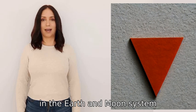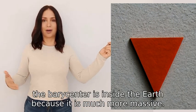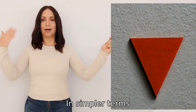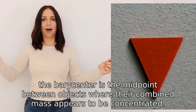For example, in the Earth and Moon system, the barycenter is inside the Earth because it is much more massive. In simpler terms, the barycenter is the midpoint between objects where their combined mass appears to be concentrated.